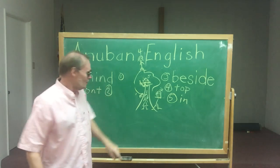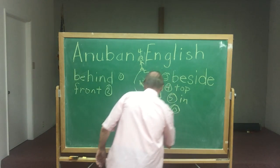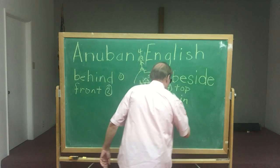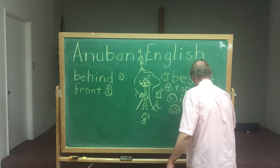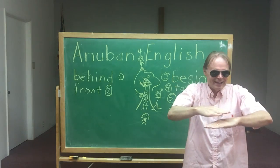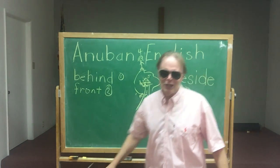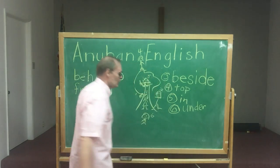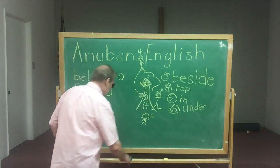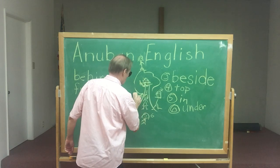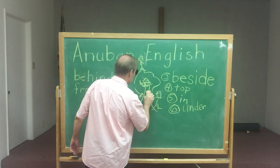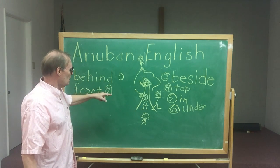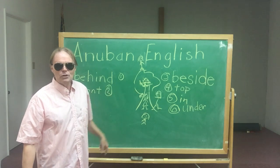Under. Which girl is under the tree? Number six. I forgot to put number six here. Now I'm going to erase the numbers — four, five, one, six, three, two — and I'm just going to point to the word. I'll point to the person on the board and you tell me which position it is.